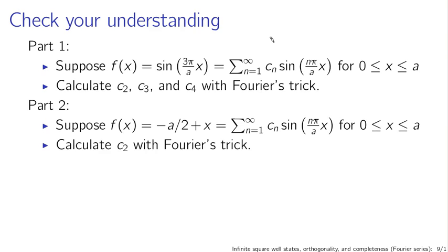To check your understanding, here are two relatively straightforward problems to use Fourier's trick and the orthogonality conditions for sine: determine c2, c3, and c4 for the first f(x), or c2 for the second f(x).